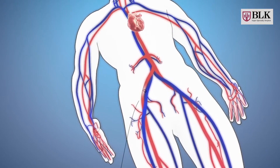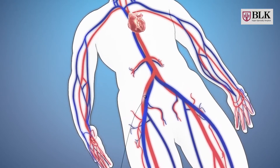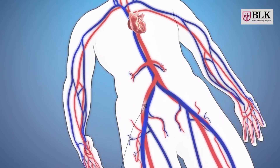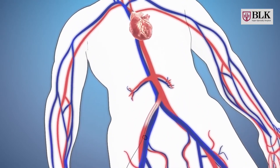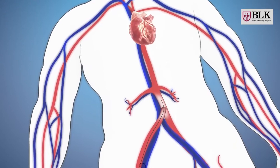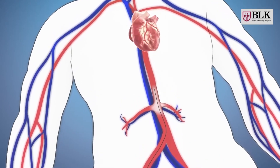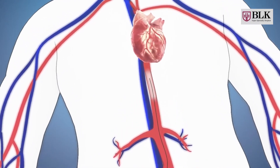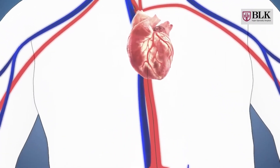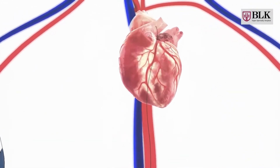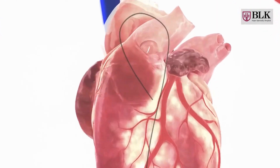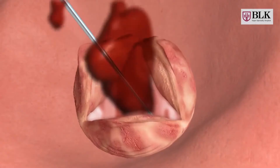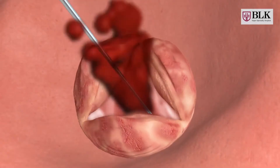We puncture the femoral artery and then pass a catheter right up to the ascending aorta, that is the major blood vessel of the body, and through this, inside the valve.